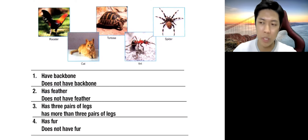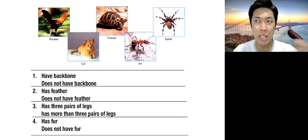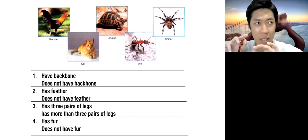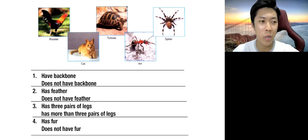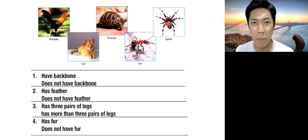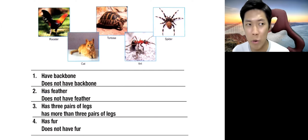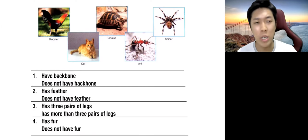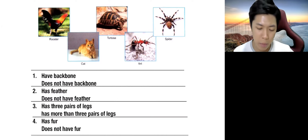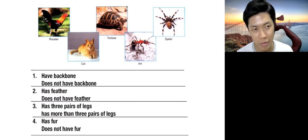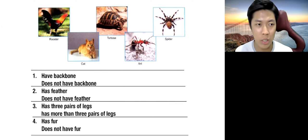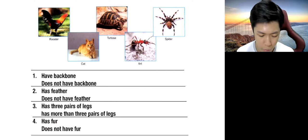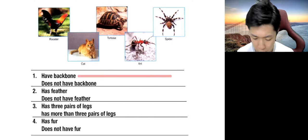So we have the characteristics to write down, which is having backbone or not having backbone, because that's the title of the category. So we're not going to do that. We will instead write or describe their characteristics, which is having backbone and does not have backbone. So that will instantly split this five animal into half, which is rooster, tortoise, cat in one group, that will have backbone.